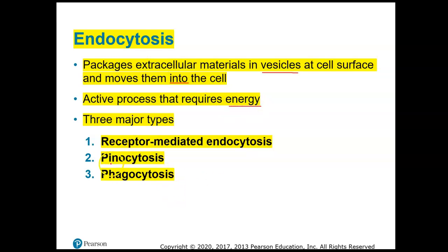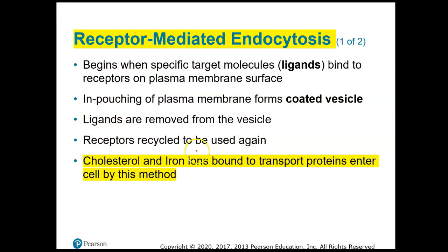The three types of endocytosis are: pinocytosis, also called cell drinking, where the cell brings in a solution; phagocytosis, or cell eating, where the cell brings in some solid material; and receptor-mediated endocytosis, where material is brought into the cell bound to receptors, so it is a specific material entering the cell.